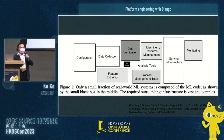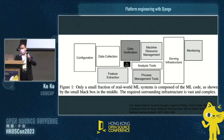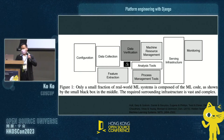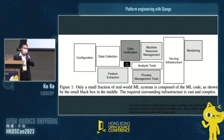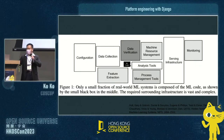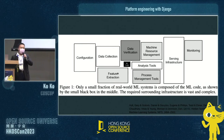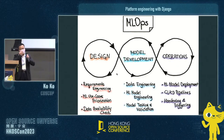There is a very famous paper from Google showing that the ML code itself is a very small part of an AI project. In an AI project, you also have to handle serving infrastructure, monitoring, resource management, analysis tools, process management, data verification, data collection, and more. So machine learning code is the center but a very small part — you may spend more time on infrastructure serving, monitoring, and data collection.